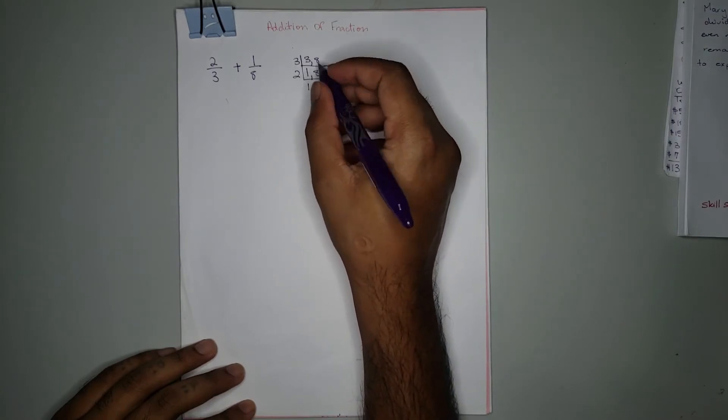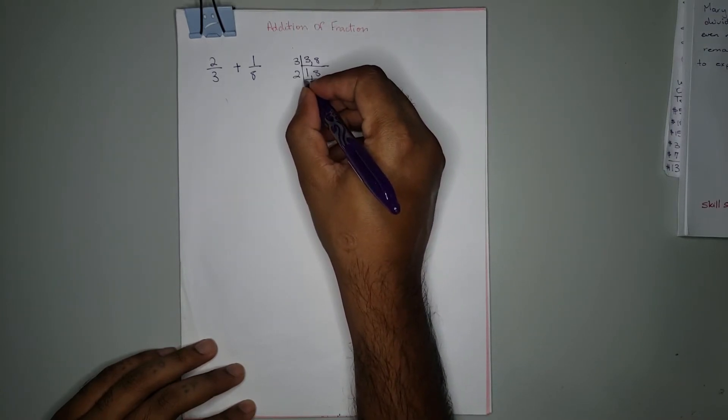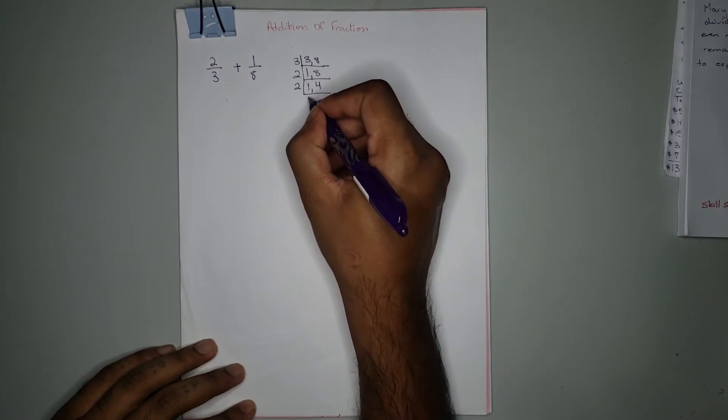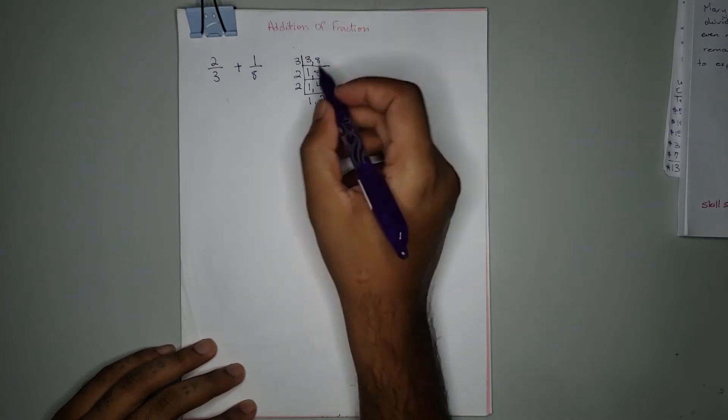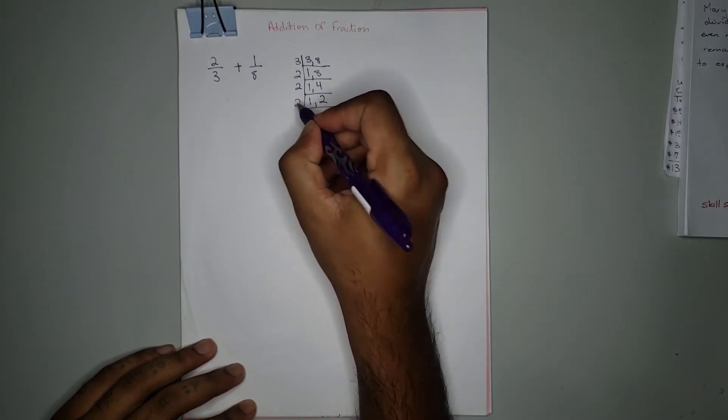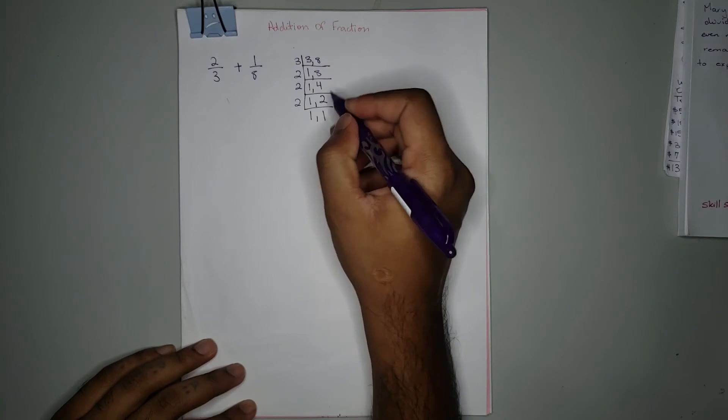We use 2. Two cannot go into 1, so we write back 1. Two can go into 8 four times, so you write 4. Try 2 again. Two cannot go into 1. Two can go into 4 two times, and then again, 2 can go into 2 one time.